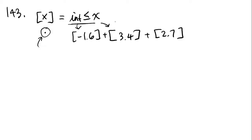So bracket x would equal the integer that is less than or equal to x. This is very similar to a problem that we saw earlier that had a little target symbol where they would give us a rule for what this meant and then you had to apply it to an equation. In the case of 143, they give us the equation and it's bracket negative 1.6 plus bracket 3.4 plus bracket 2.7.